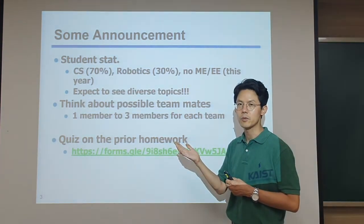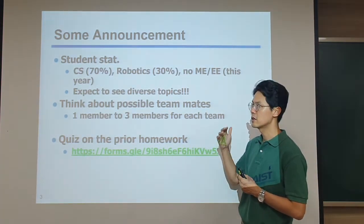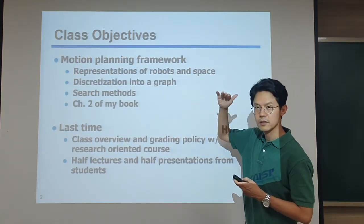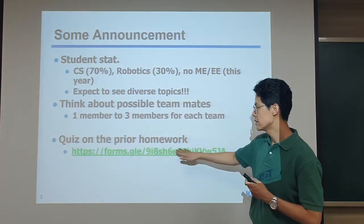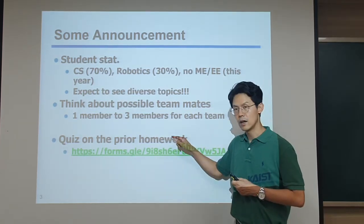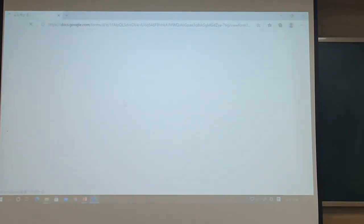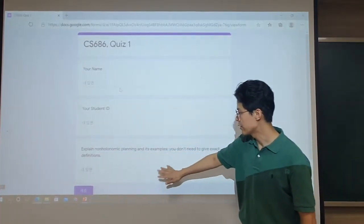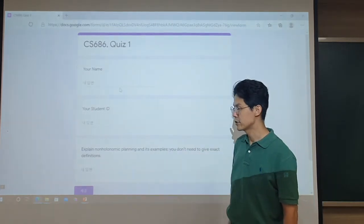Last time I gave some homework near the end of my first lecture: reading a particular chapter of the motion planning algorithm textbook. If you go over that book, you can easily work on this assignment. If you click the link, you can see a Google document where you write down your name, student ID, and a short answer. If you read the book, you can very easily answer it.